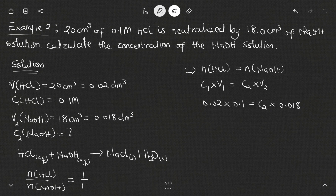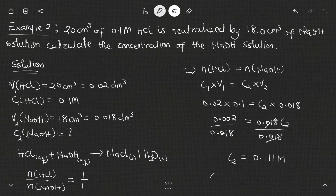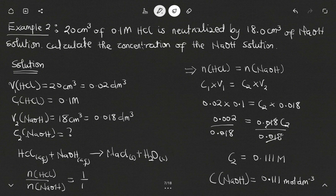From 0.1 × 0.02 = 0.002 = 0.018 × C2, dividing both sides by 0.018 gives C2 = 0.002 / 0.018 = 0.111 mol per dm³. Therefore the concentration of sodium hydroxide in this case is 0.111 mol per dm³. Thank you for watching and I'll see you in the next video.